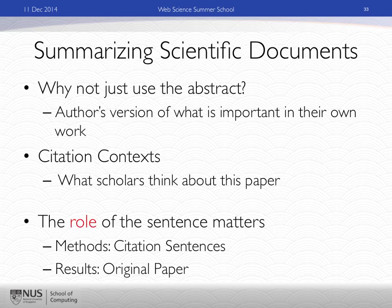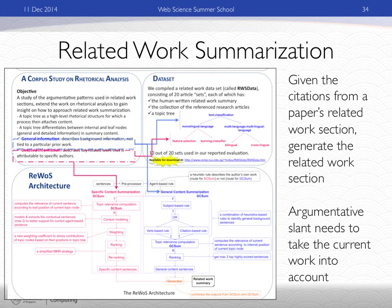We want to use information about citations in papers and even in presentations. There's no system currently that can mine presentations for citations and link this information together. In our group, we've been working on related work summarization — we take a scientific paper, remove the related work section, keep the citations, and ask the computer to generate the related work section. That means writing your literature survey automatically. We can do some of this to automate processing and make it easier for junior researchers to understand what are the important works in an area.